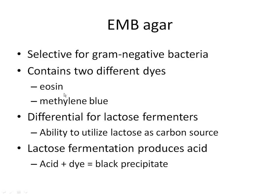Our second media for today is called EMB agar, which stands for Eosin-Methylene Blue. Eosin and methylene blue are the two major components. The addition of these two dyes — one green and one blue — allows only gram-negative bacteria to grow. Therefore, EMB agar is selective for gram-negative bacteria. In addition, this media can also tell us if the bacteria has the ability to ferment lactose. If it does, we will see a black precipitate occur.